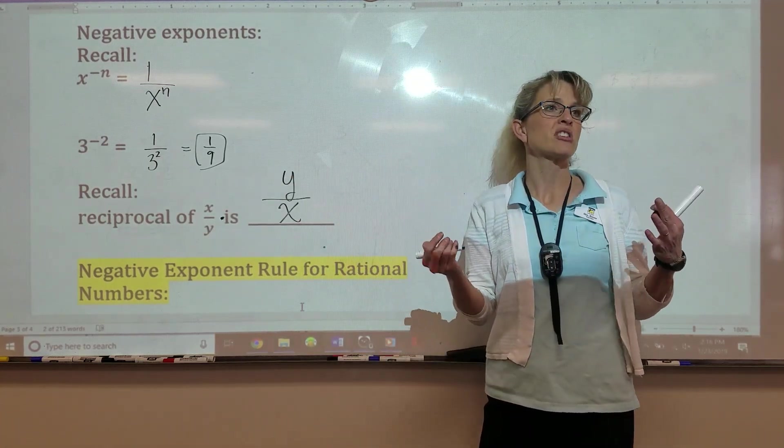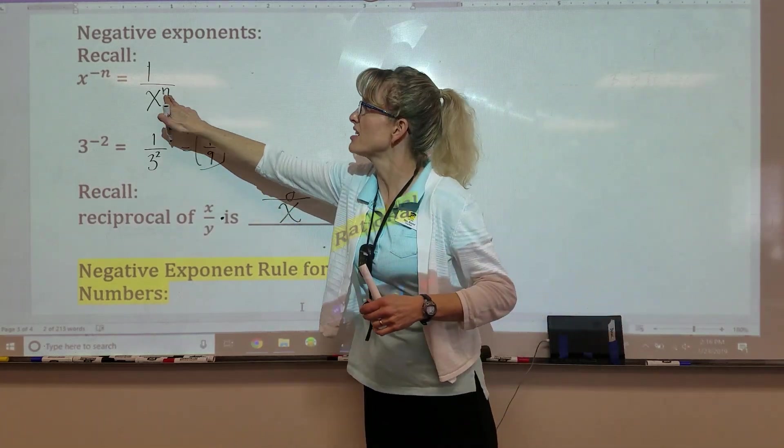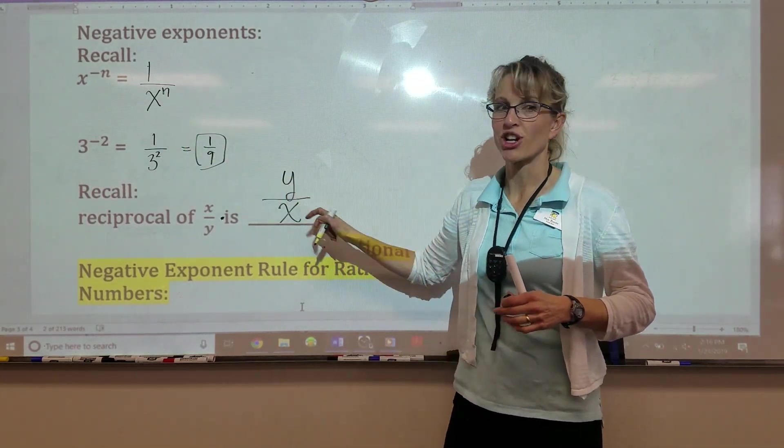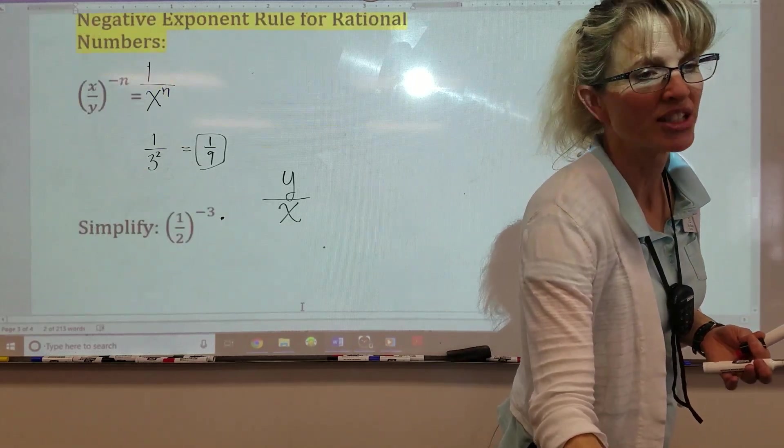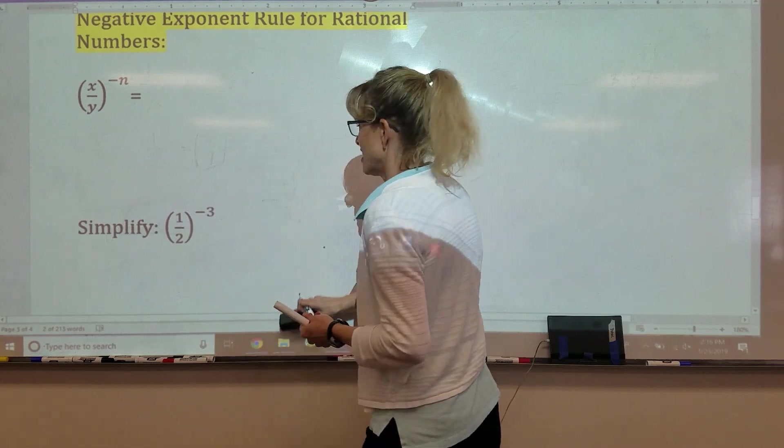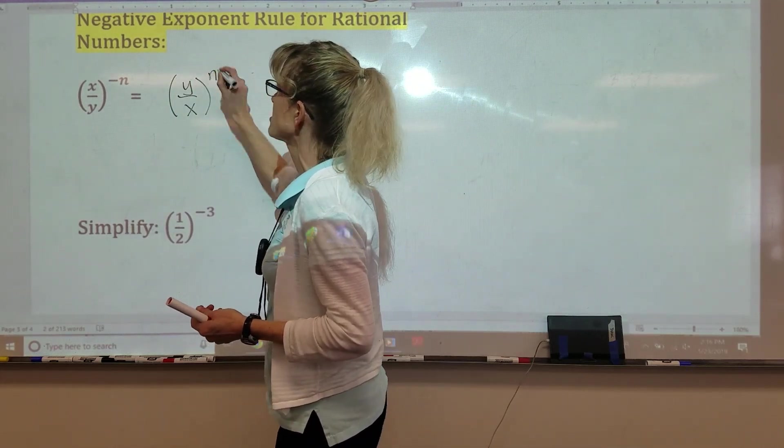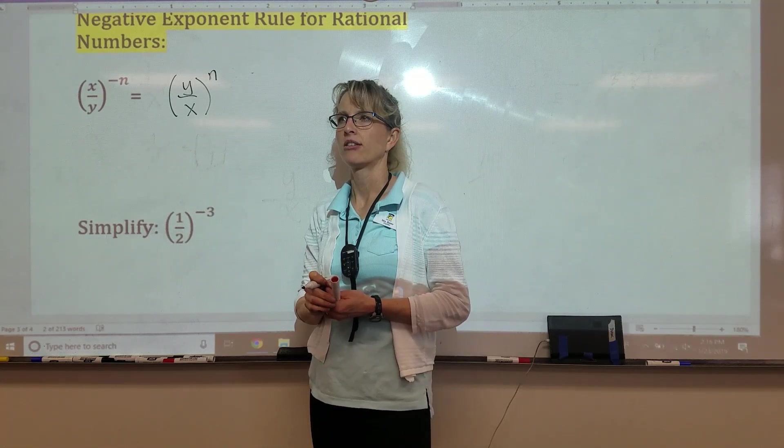And then if you multiply it, you would get 1. So just think of the reciprocal as the flipped version of the fraction. So we're going to use this law and this law. We're going to combine that into a new law. x over y to the negative exponent.